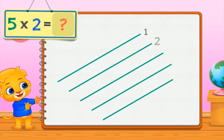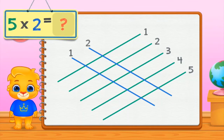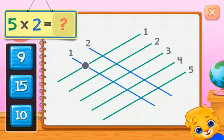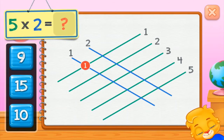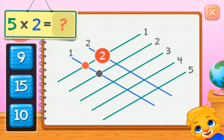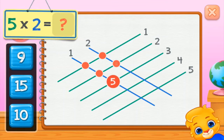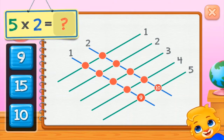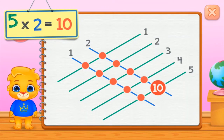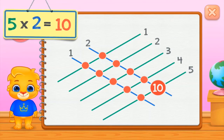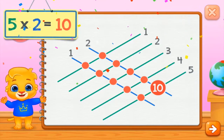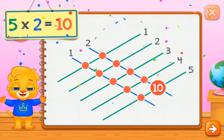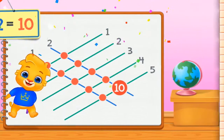5 times 2 equals... 1, 2, 3, 4, 5, 6, 7, 8, 9, 10. 5 times 2 equals 10.